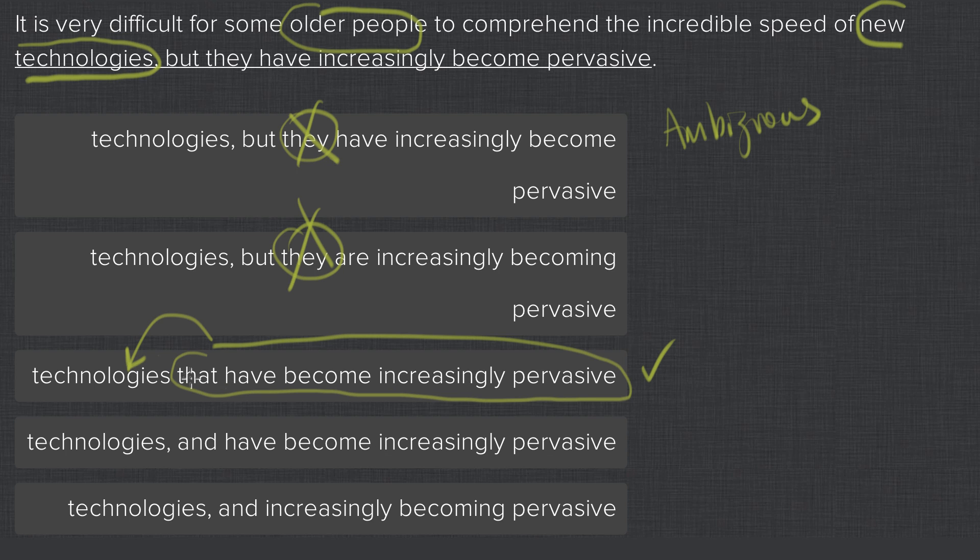Now, the last two options actually have a conjunction. We have a comma and. After our comma and here, you could label this as a punctuation error, I guess, if you could say this conjunction is incorrect.